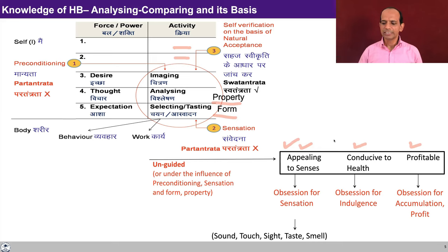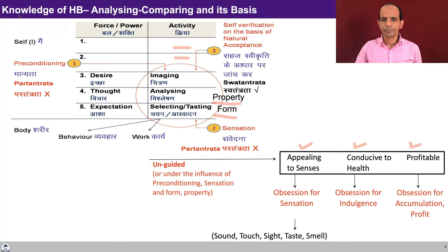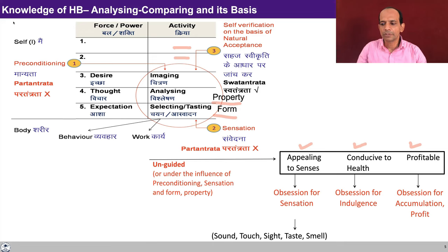The second kind of obsession is obsession for indulgence. If you try to consume something for happiness and want happiness in continuity, then the tendency to consume as much as possible will lead to obsession. For example, if one feels that by having a number of houses or owning a lot of property one is going to be happy, then one may go for accumulation. So we'll see that when guidance is not available from the higher level activities, the thought gets into this kind of analysis and comparing — comparing on the basis of senses, on the basis of whether it is conducive to health or not, and whether it is profitable or not — and if these are not guided, they may lead to obsession.